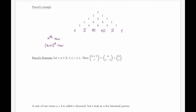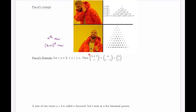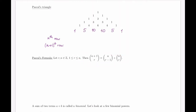Let's consider what's called Pascal's Formula. We have two integers r and n, where r is less than or equal to n. The formula is: n+1 choose r equals n choose r−1 plus n choose r. There are different ways to prove it — one proof is by induction, which we'll see in the next section. But first we're going to prove it combinatorially using counting.